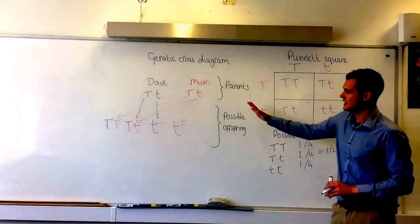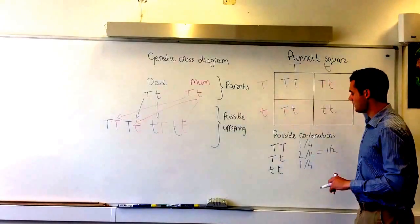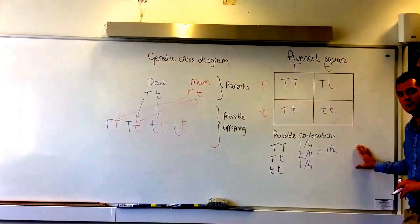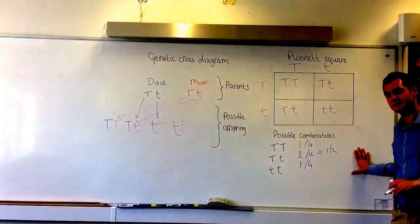That's how you complete the genetic cross diagram and a Punnett square, and this is how you calculate the probability of the different combinations of genes. Thank you.